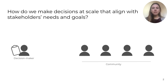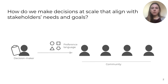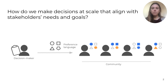There are many contexts in which a decision maker needs to make a decision that will impact a large number of people. In those contexts, decision makers might want to know how they can make decisions at scale that align with stakeholders' needs and goals. One way of doing this is to design a preference language, give that to stakeholders in the community, and ask them to tell you their preferences over the decision outcome. The decision maker can then decide how they will aggregate those preferences to make a final decision.